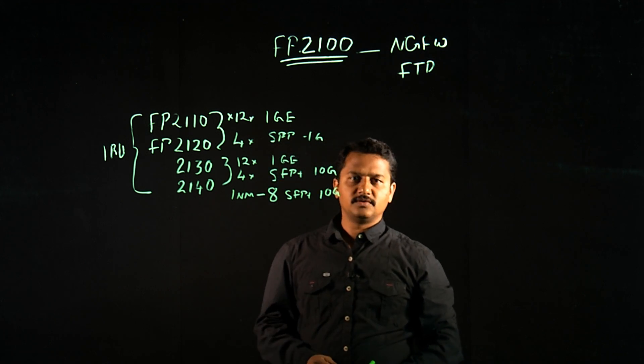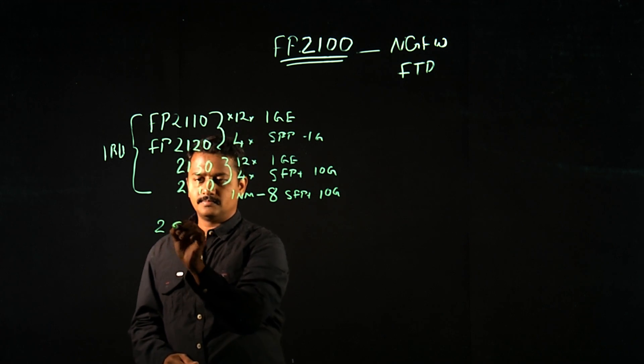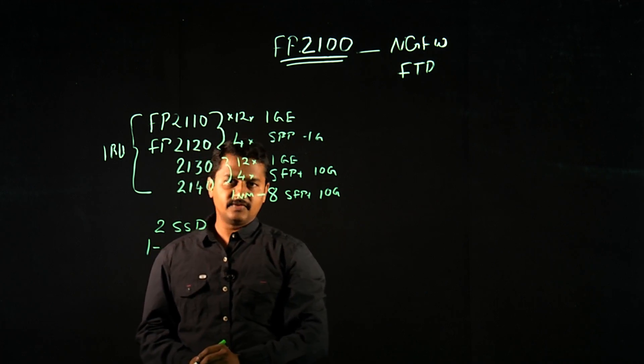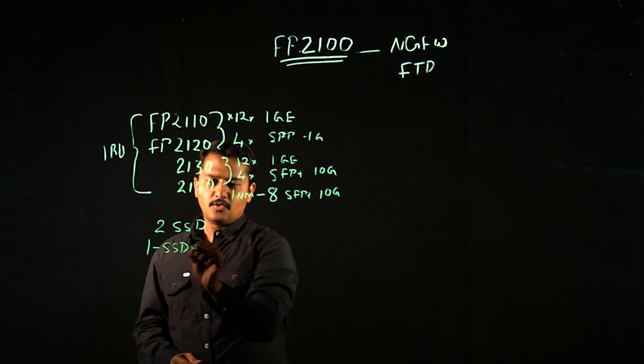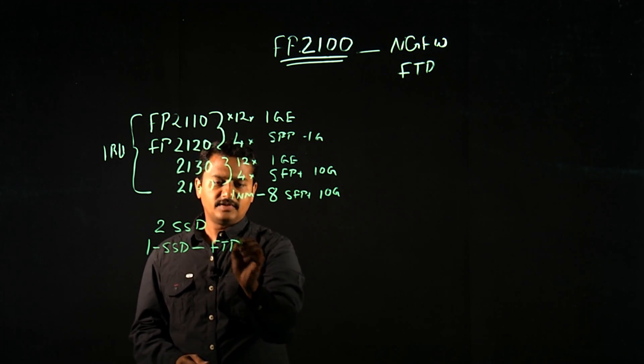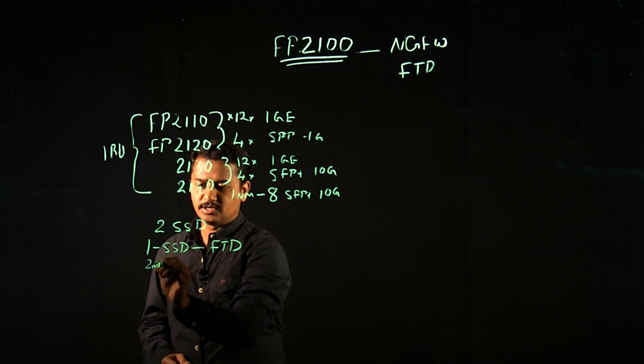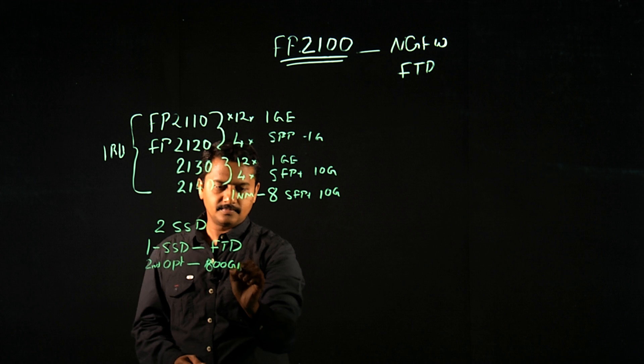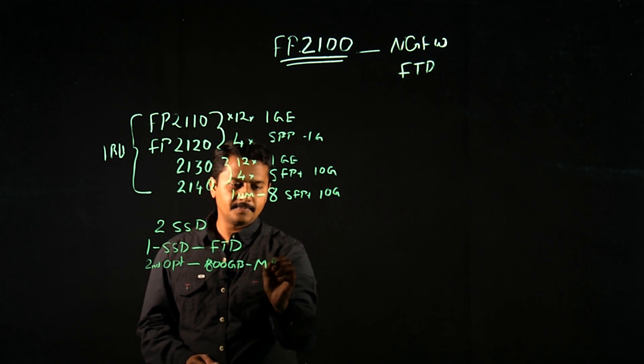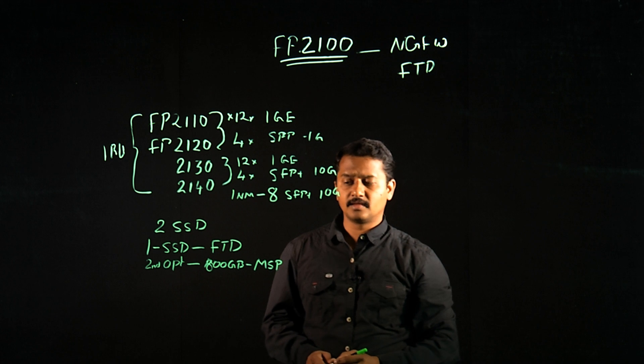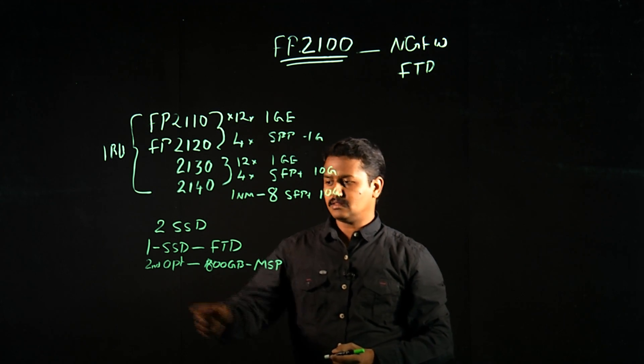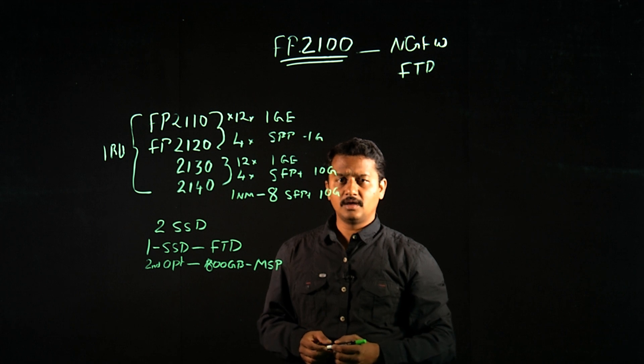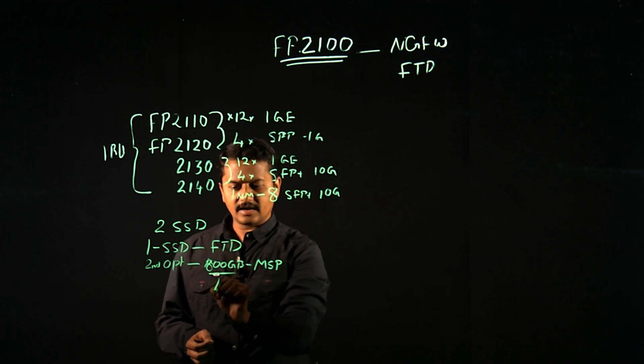On these all four models, we have two SSD slots. So by default, one SSD comes with SSD hard drive, which primarily runs Firepower Threat Defense software. The second SSD slot is optional. For example, it can take an 800 GB of hard drive, which is primarily used for MSP, which is malware storage pack. If you have AMP license enabled and the second SSD slot with 800 GB hard drive, if this firewall sees any malicious file or unknown file, it can be stored on this extended hard drive for future investigation.